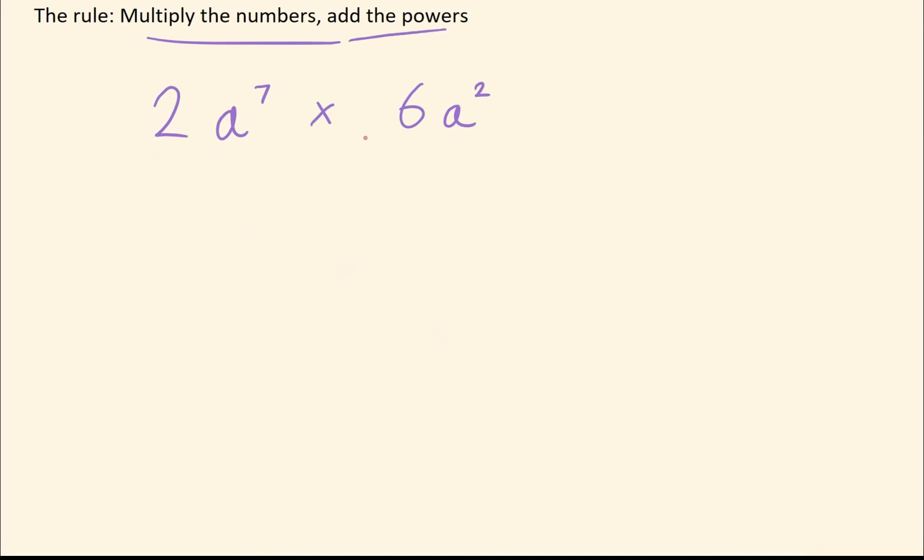So for this question, you would do 2 times 6, which gives you 12, and then add the powers. 7 plus 2 is 9. So it would be 12a to the 9. Or redundantly, 12 times a to the 9, but you really don't need that times sign.